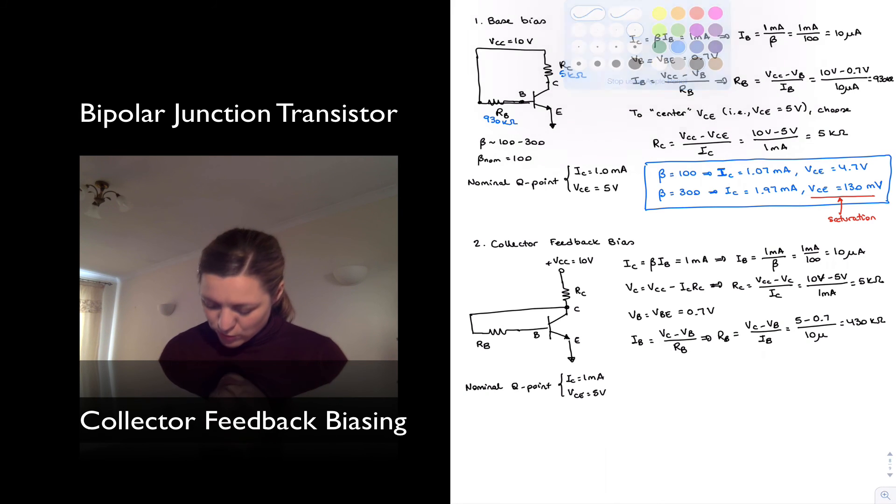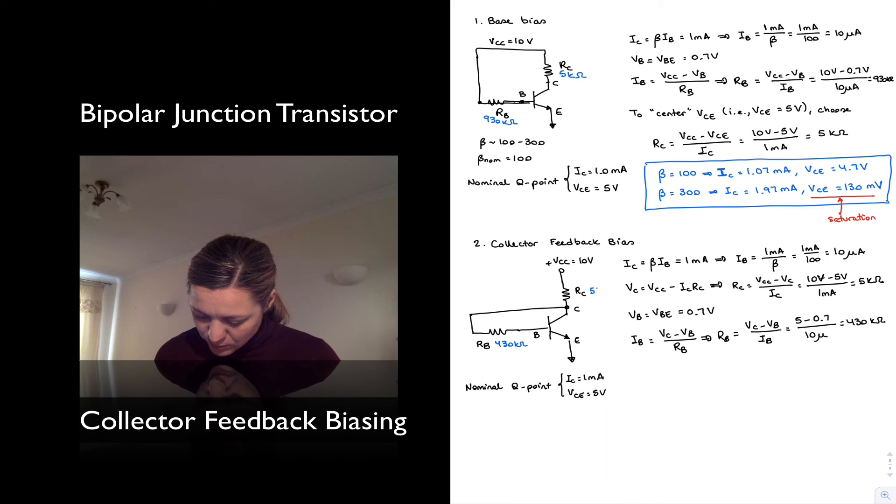So again, I can put my values here. This is 430 kilo-ohms. This is 5 kilo-ohms. And this is my nominal Q point, so for beta equals 100. This is what I will expect. And when I run the simulations, I get, for beta equals 100, an IC of 1.01 milliamps, so very close to 1, and a VCE of 4.96 volts. So again, very close to 5, as I expect.